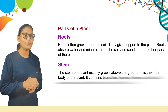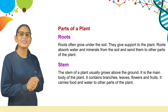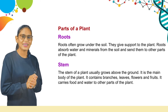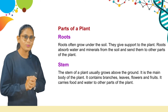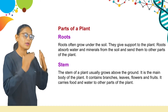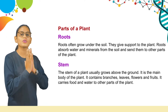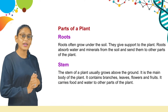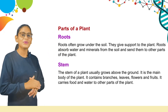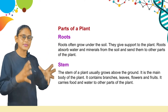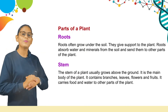Now, the stem. The stem of a plant usually grows above the ground. It is the main body of the plant. It contains branches, leaves, flowers, and roots. It carries food and water to other parts of the plant. Students, after the root there is the stem. The stem grows above the soil, it is the main part of the plant body, and on it grow the branches, leaves, and flowers.